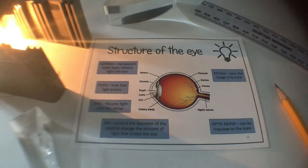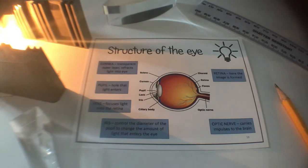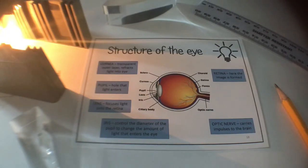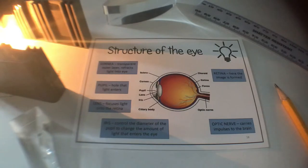Let's have a look at the summary of the structure of the eye for Key Stage 3. We've got the cornea, which is the transparent outer layer where light refracts into the eye - that's the part a contact lens sits on if you're correcting your vision that way. We've got the pupil, which is the hole that light enters through, and that can get smaller or larger depending on how much light is present.